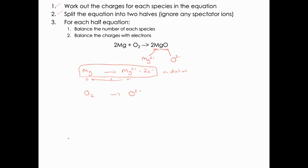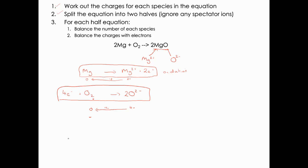For the oxygen half equation: first balance the number of species — two oxygens on the left, so we need two O2- on the right. The charge on the right is 4- (two O2- ions) and the charge on the left is zero. Add electrons to the most positive side, which is the left. To go from 4- to zero, add four electrons: 4e- + O2 → 2O2-. This is the reduction half equation, because the oxygen is gaining electrons on the left-hand side. You can now have a go at the worksheet on Teams and check your answers on the mark scheme.